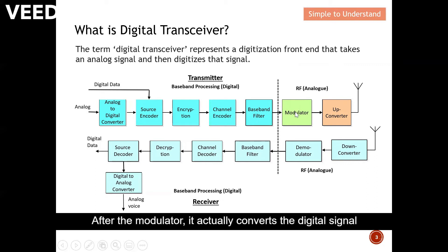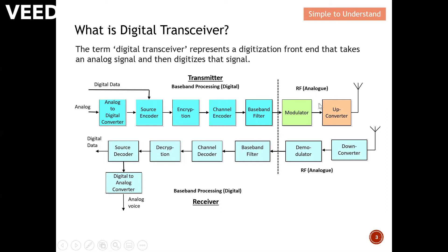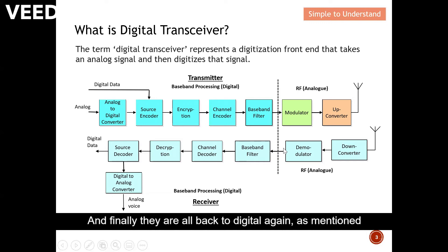After the modulator, it actually converts the digital signal into an analog signal. The reason why this is essential is because when we transmit the message over the air, we need to change into an electromagnetic wave. Hence the task is partially done by the modulator by converting the digital signal into an analog signal. After the transmitter sends the message to the receiver, all these are still analog. And finally they are all back to digital again. So they convert back to digital so that we understand or we can hear the message. So this is the definition of digital transceiver.